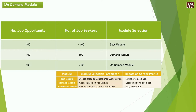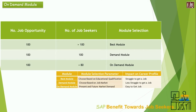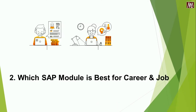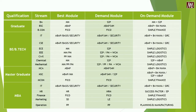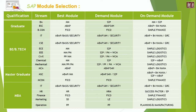Going ahead, we will cover which SAP module is best for career and job. In the presented table, we segregate the modules based on qualification, considering the stream. To make it clearer, we also categorize the modules into three different segments, similar to the previous slide: best module, demand module, and on-demand module.